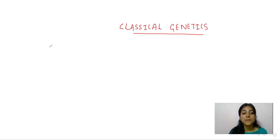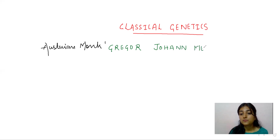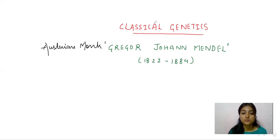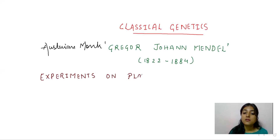Before knowing classical genetics, we must know about Mendel. There was an Austrian monk named Gregor Johann Mendel. He did experiments on plant hybridization and published a paper named 'Experiments on Plant Hybridization.'